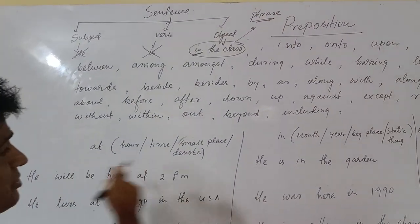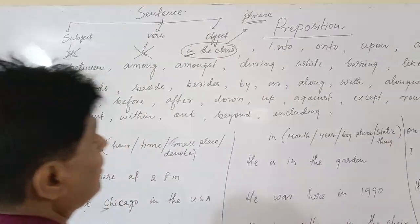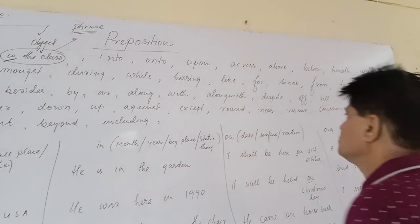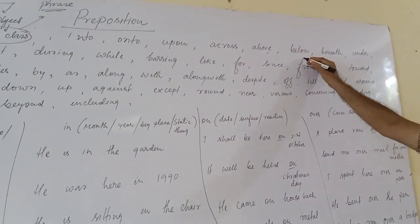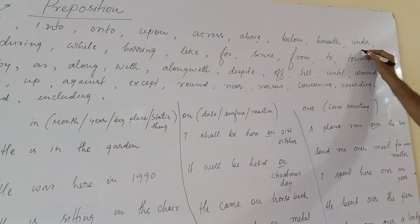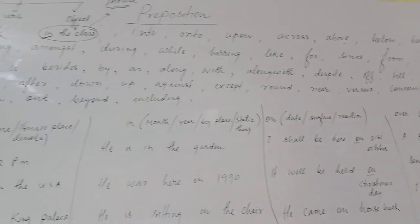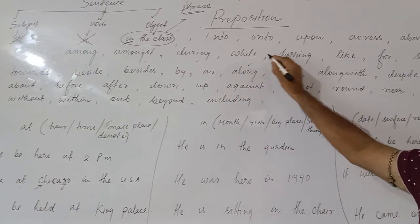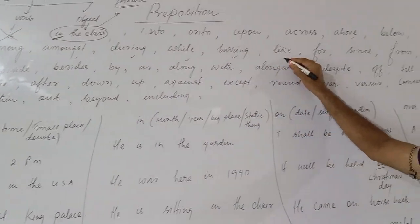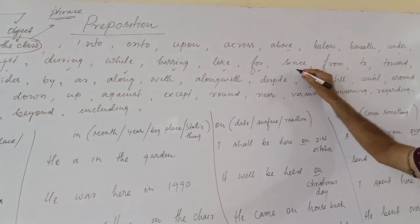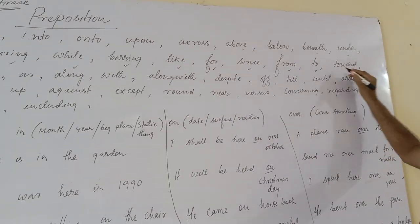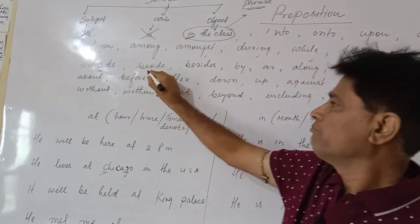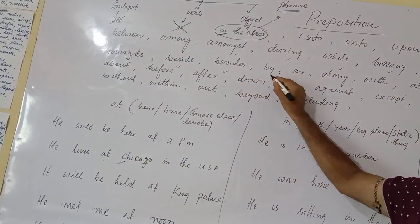Prepositions like at, in, on, over, off, into, onto, upon, across, above, below, beneath, under, between, among, amongst, during, while, bearing, like, for, since, from, to, toward, towards, besides, by, as,